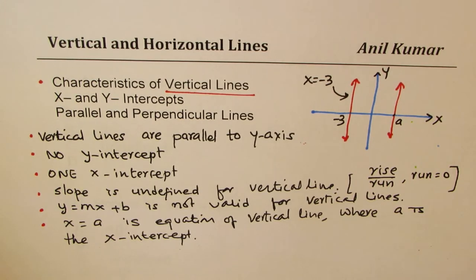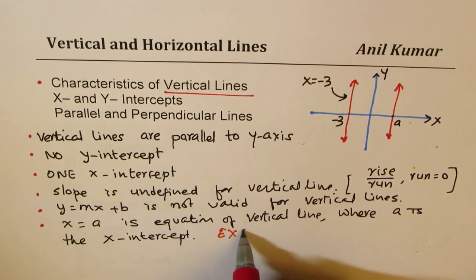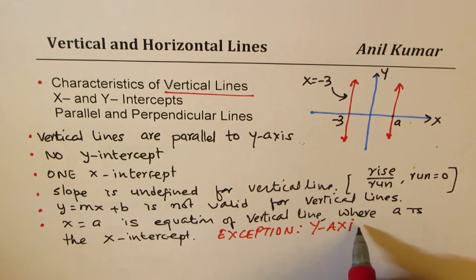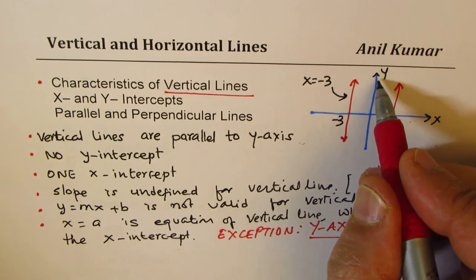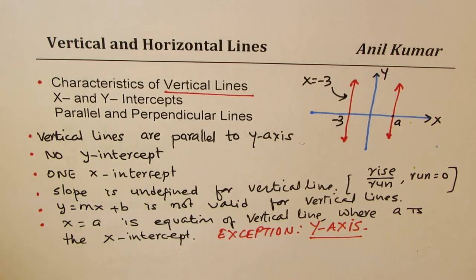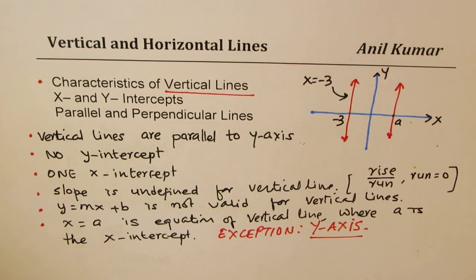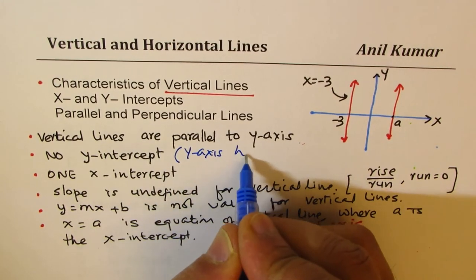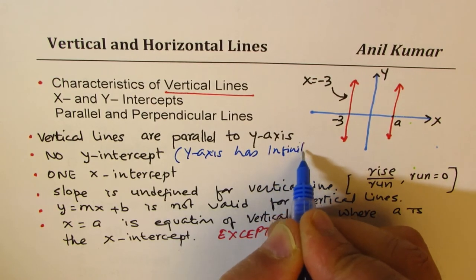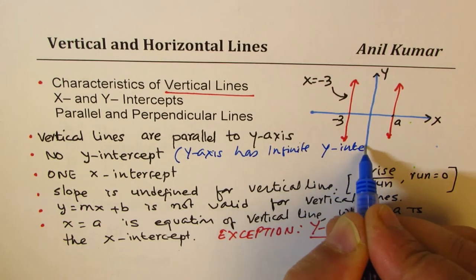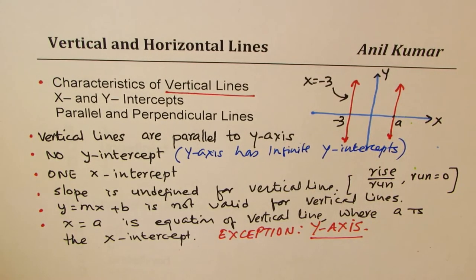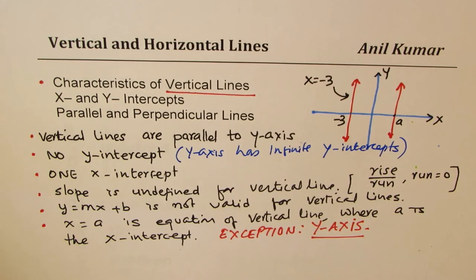The exception here is the Y-axis. In the Y-axis, how many Y-intercepts do we have? Infinite. So the exception is that the Y-axis has infinite Y-intercepts. That is how we should be understanding vertical lines.